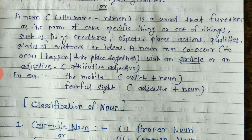A noun can co-occur with an article — that is, if there is a noun somewhere, we can write it with an article before it, then the noun. And an adjective — a noun can also come after an adjective. For example, 'the mobile': here 'the' is the article and 'mobile' is the noun. Similarly, 'fearful sight': 'fearful' is the adjective and 'sight' is the noun.